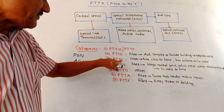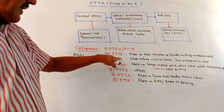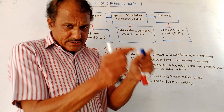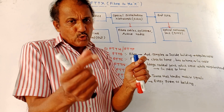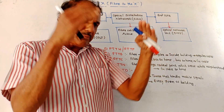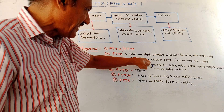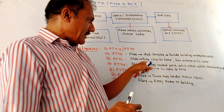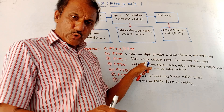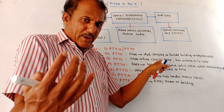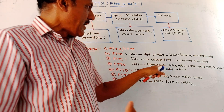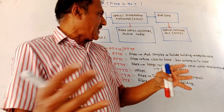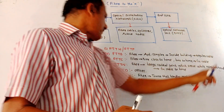Next is FTTC — fiber to the cabinet. There is one optical box that may be near the home or on the street. Fiber is connected to that cabinet box, which is close to the home. From that fiber optical box, the connection to the home is done using copper cabling.